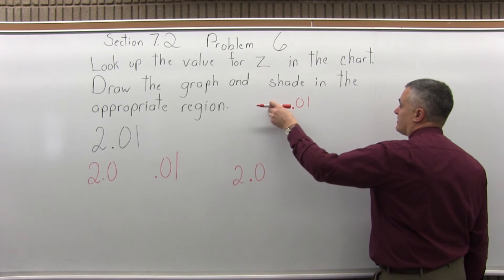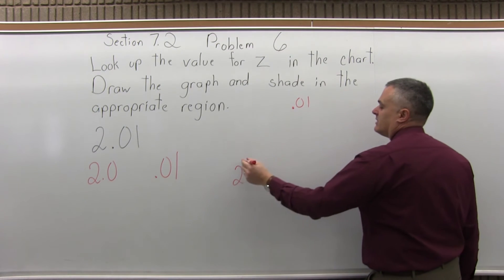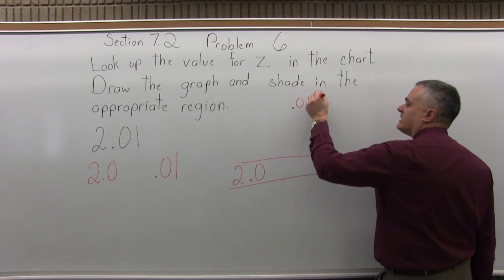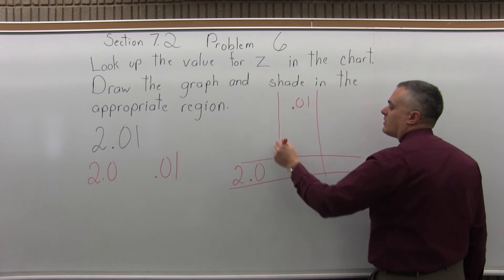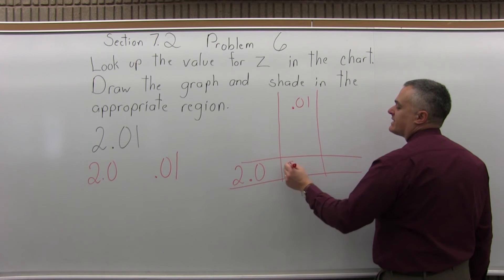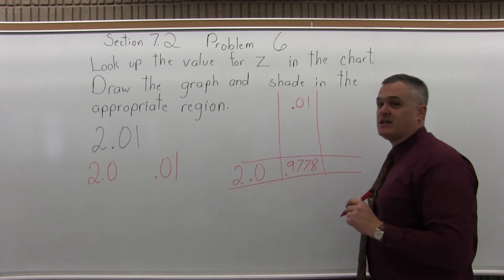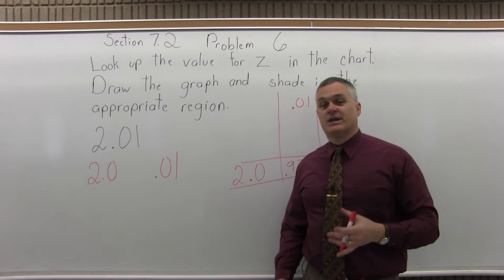the very first column is .00 so you don't want to be in the first column, you want to be over into the second column. And you see where the 2.0 row and the .01 column intersect. They intersect at .9778. So that's our answer but it's important to understand what that answer means.